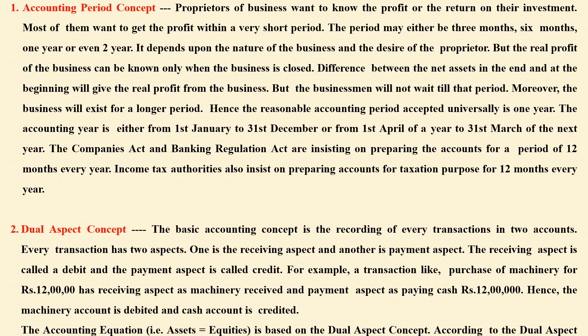The second one is the dual aspect concept. The basic accounting concept is for recording every transaction in two accounts. Every transaction has two aspects: one is the receiving aspect and another one is the payment aspect. The receiving aspect is called debit and the payment aspect is called credit. For example, a transaction like purchase of machinery for Rs. 12,000.